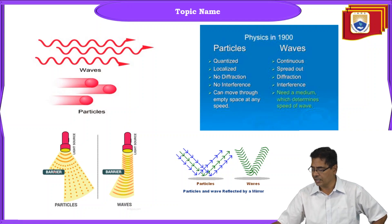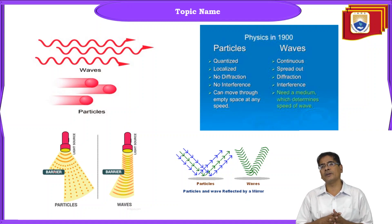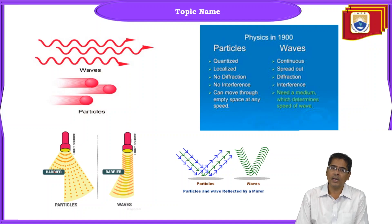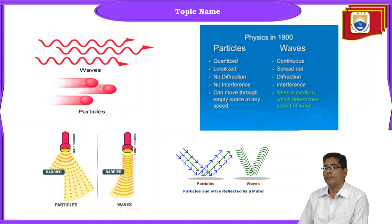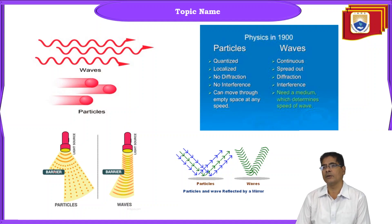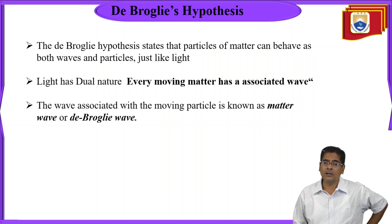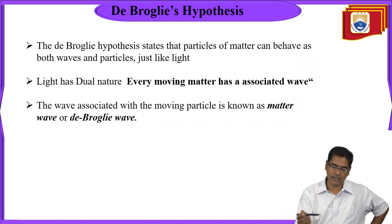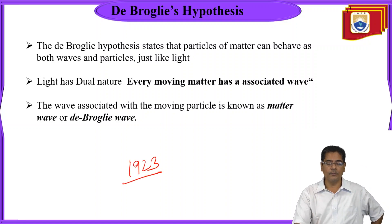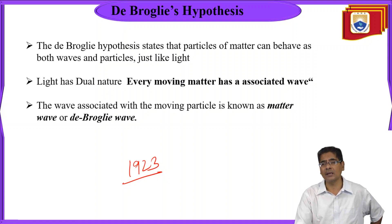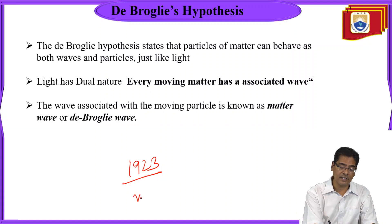To summarize: particles are quantized, can be localized, exhibit no diffraction, do not show interference, and can move through empty space at any speed. Waves are continuous, spread out at larger distances, can be diffracted and interfered, and need a medium to propagate. In 1923, de Broglie proposed his hypothesis from the fact that nature loves symmetry.